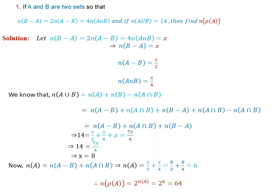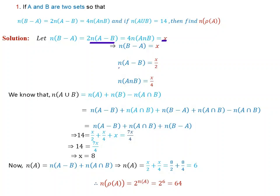Let us set up the variables. Let the number of A intersection B equal X. Then the number of B without A is equal to 2 times the number of A without B, which equals 4 times X. So the number of B without A is X, and the number of A without B is X over 2. The number of A intersection B is X over 4.